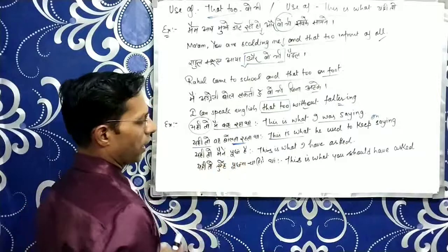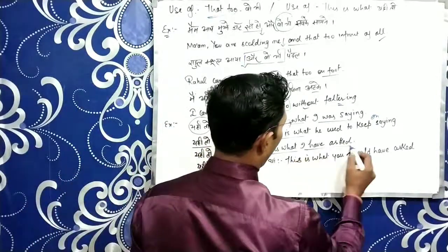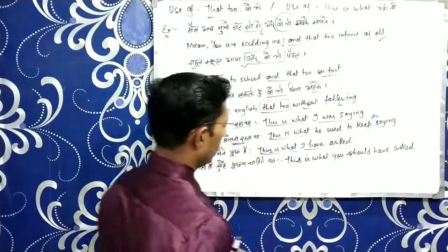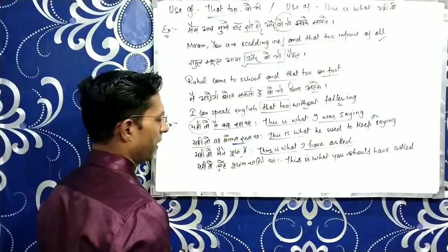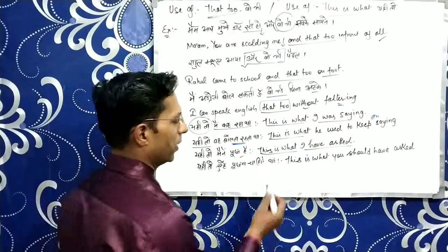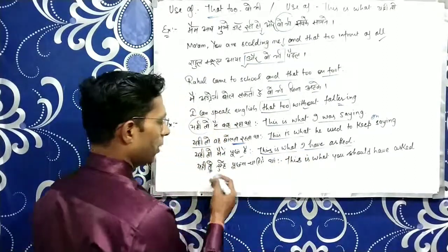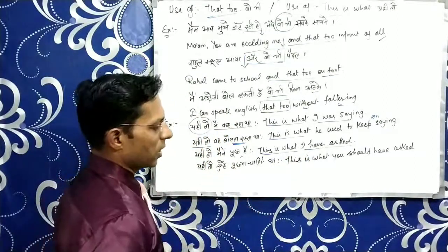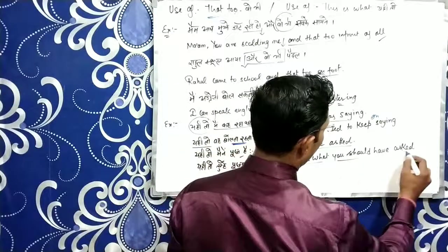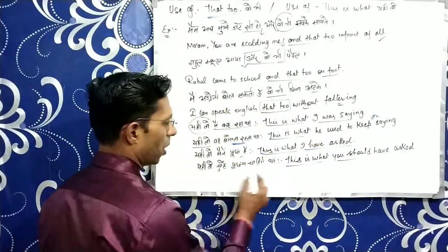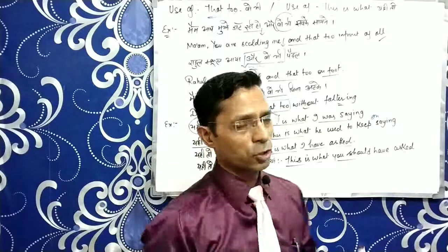Yehi toh maine poocha hai — This is what I have asked. Present perfect tense. And yehi toh tumhe puchna chahiye tha — This is what you should have asked. This is what you should have asked.